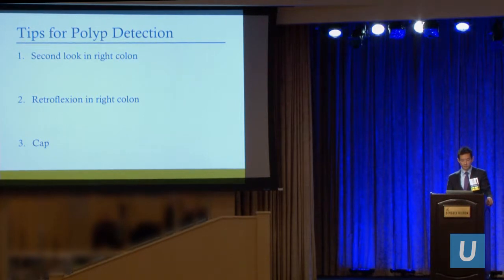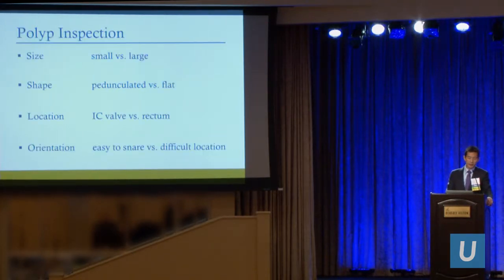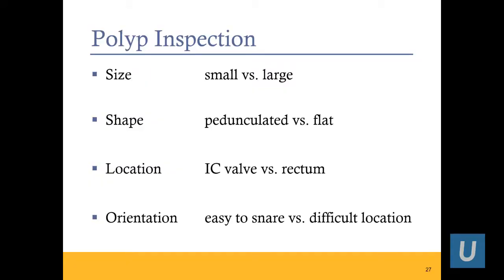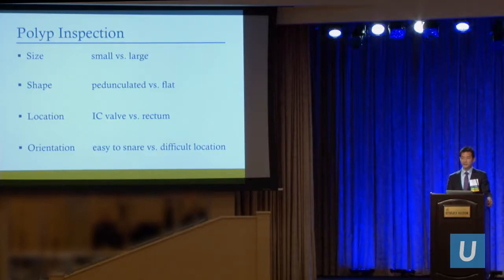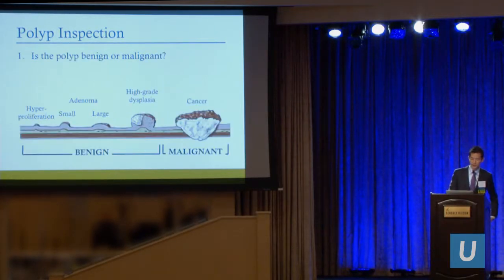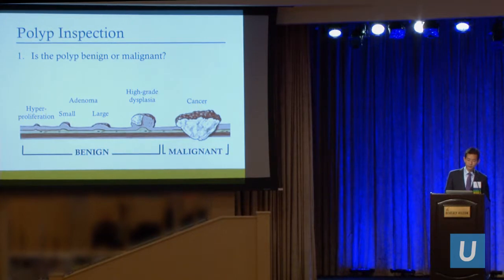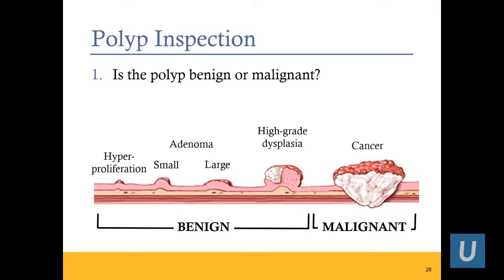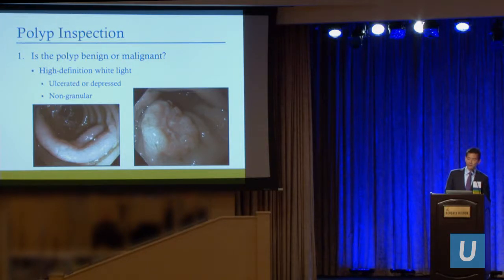So those are my tips for detection. Moving to inspection: when we inspect polyps, we do this kind of immediately. You see a polyp and quickly assess size — small or large; morphology — pedunculated or flat; location in the colon; and whether it's easy to snare or in a difficult location such as on the hepatic flexure, the valve, or around the appendiceal orifice. The main question you want to answer is: is this polyp benign or malignant? Can it be removed safely endoscopically, or is it a cancer that needs surgical removal?